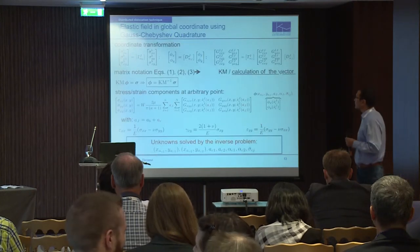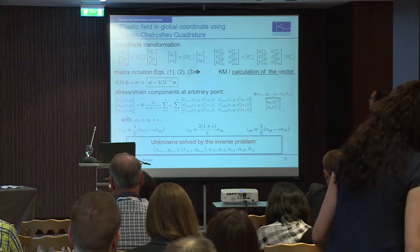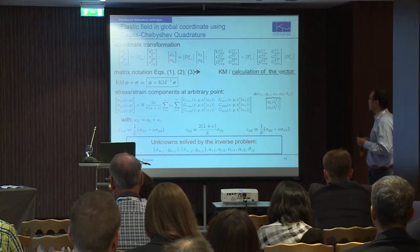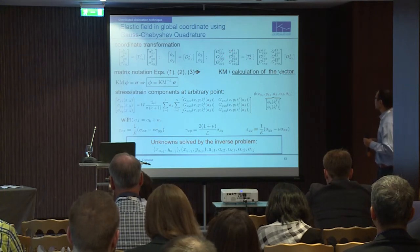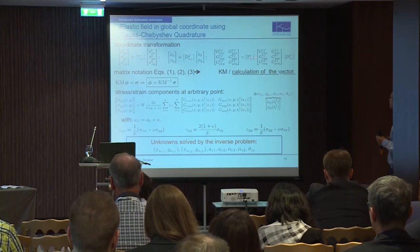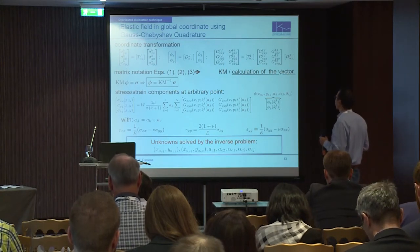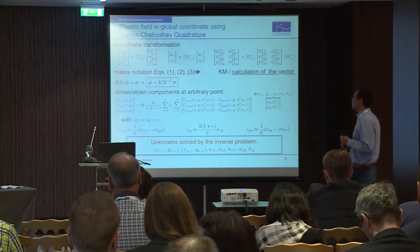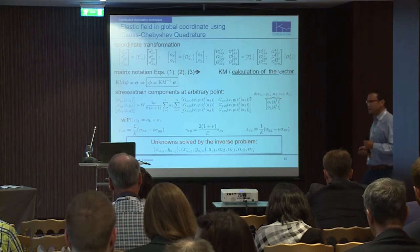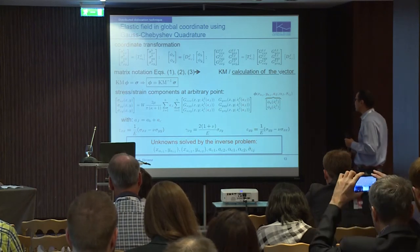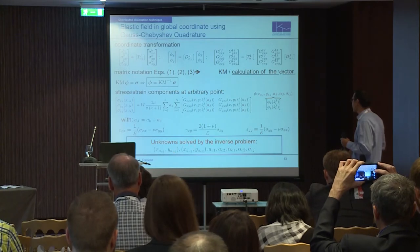To calculate the elastic field in global coordinates using the Gauss-Chebyshev quadrature, we have to first transform the boundary nodes, then the unknown vector and the dislocation, and the corresponding matrix. We have to use two transformation matrices: the first one is to transform the first subscript — the dislocation components — and the second one is to transform the components of the induced stresses. By using the matrix notation, we can calculate our vector P. Finally, we can calculate the stress or strain field at arbitrary points with these equations. The unknowns solved by the inverse problem are the crack positions, crack lengths, crack inclinations, and the boundary loads.